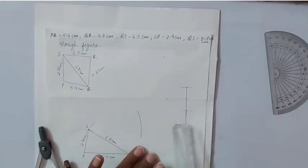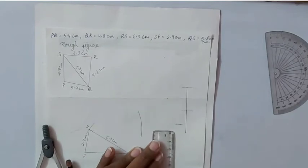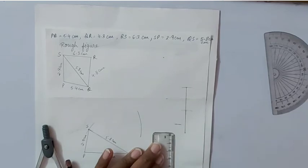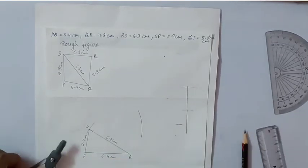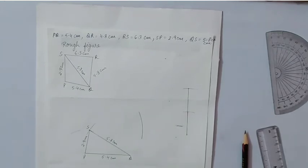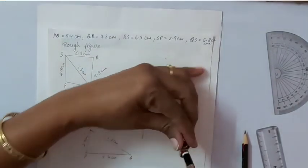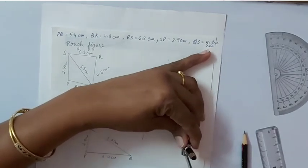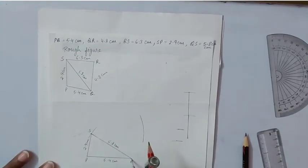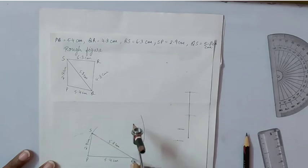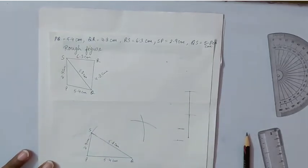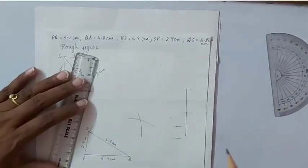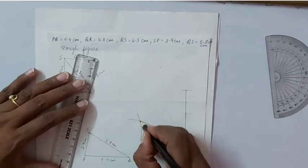Keeping the compasses on point Q, we will cut arc intersecting the previous arc. That is point R.